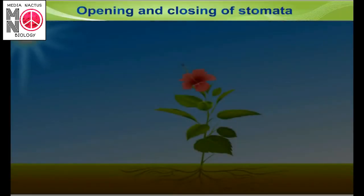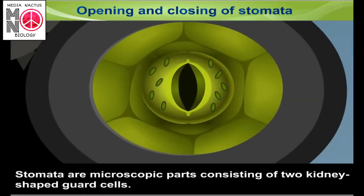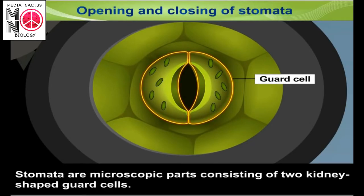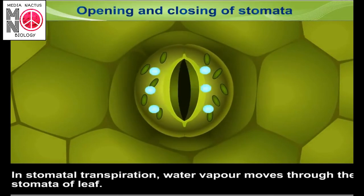Water may be released through the stomatal pores. The stomatal pore is made up of guard cells, which you studied in ninth standard. We will refresh that with a short video. Most of the transpiration takes place through stomata. Stomata are microscopic pores consisting of two kidney-shaped guard cells. In stomatal transpiration, water vapor moves through the stomata of the leaf.